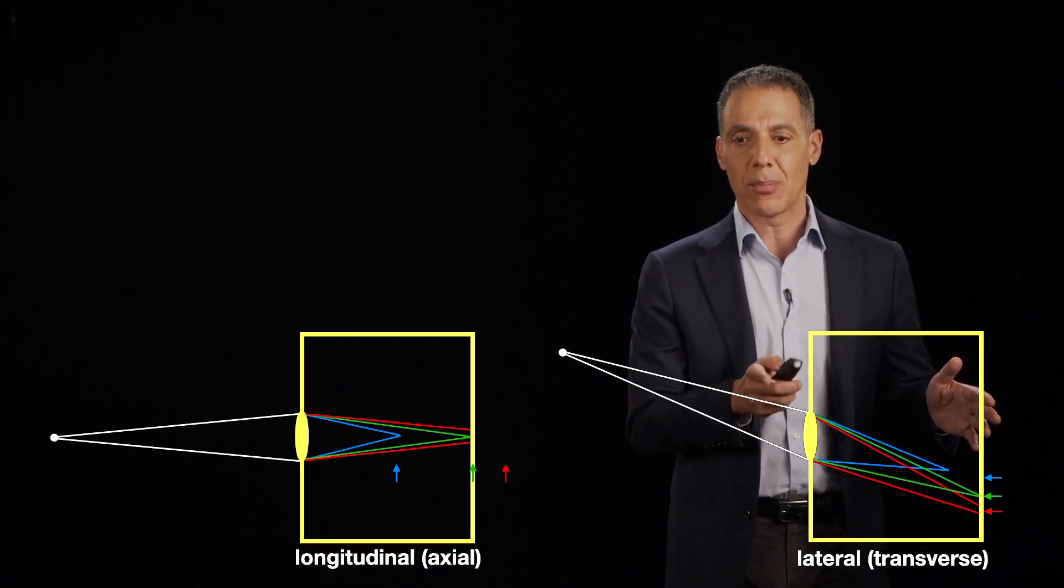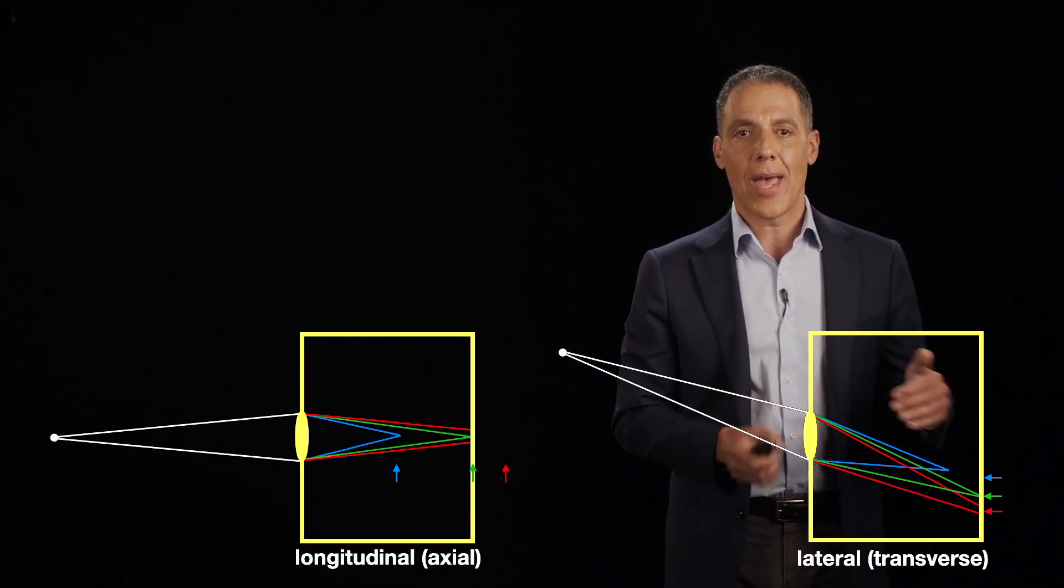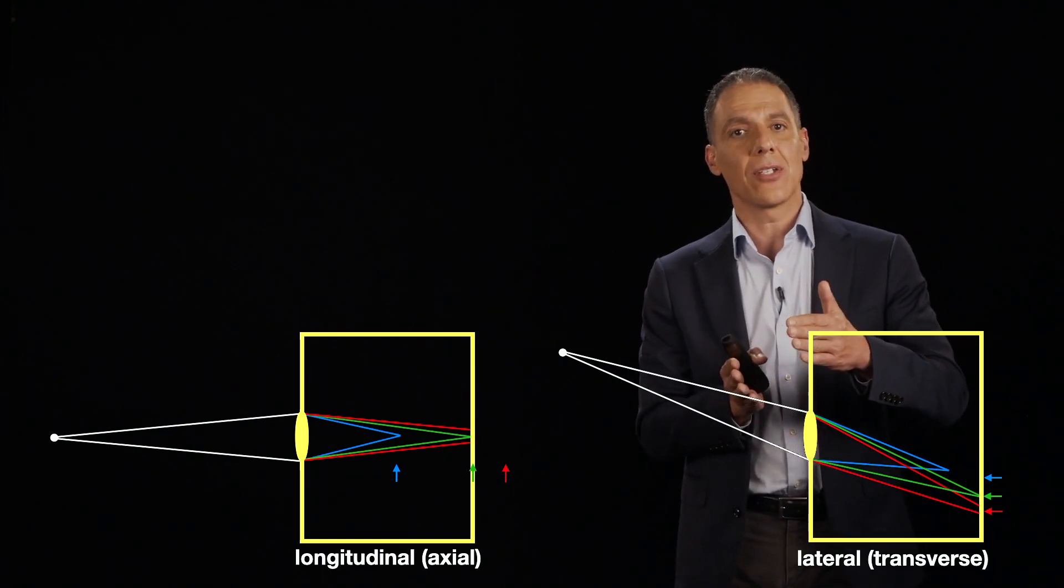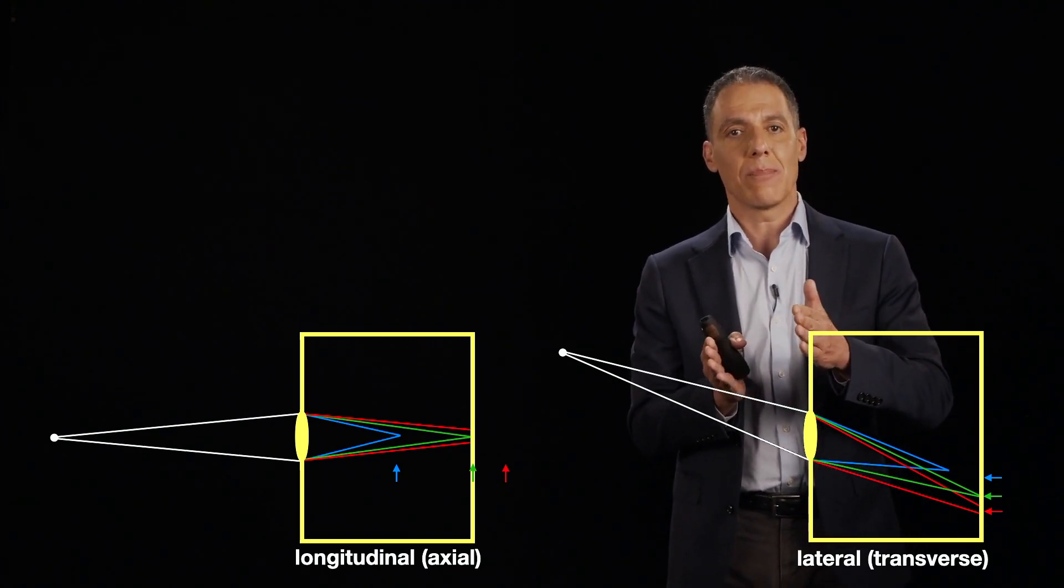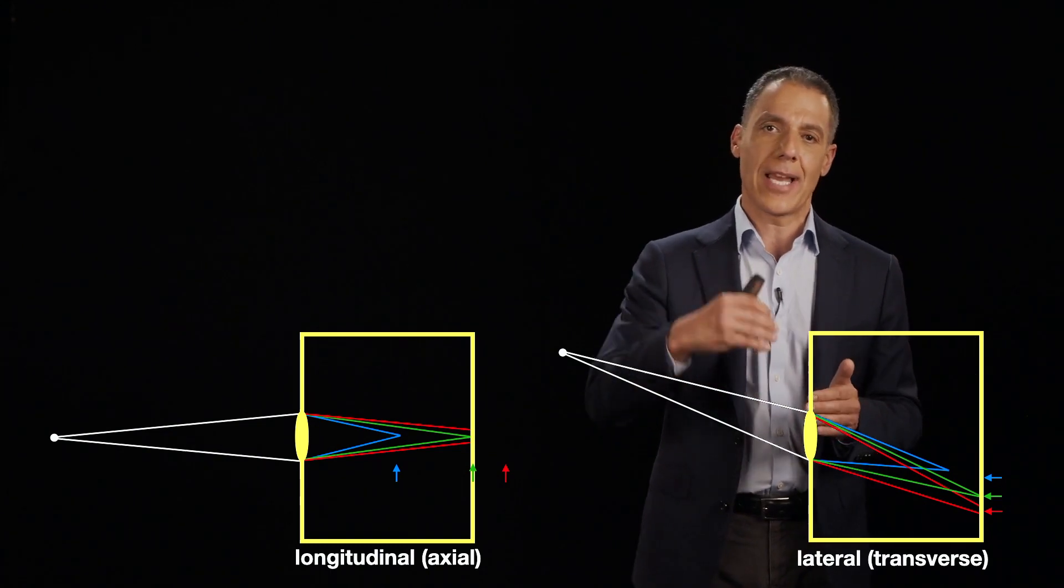Here, what you see is that the blue, the green, and the red are shifted relative to each other. Again, because of Snell's Law and the light bending differently as it enters and exits the light.